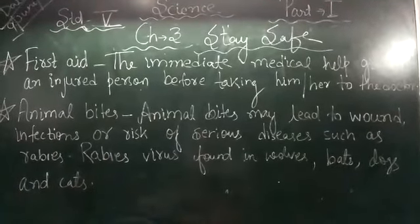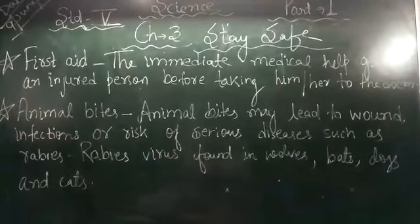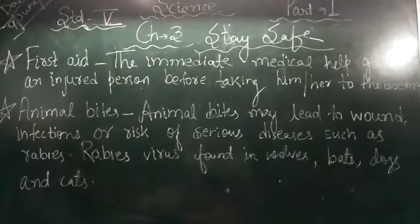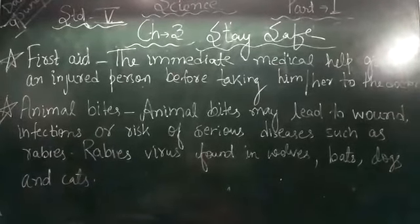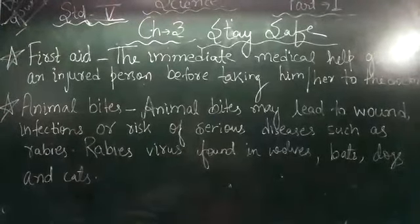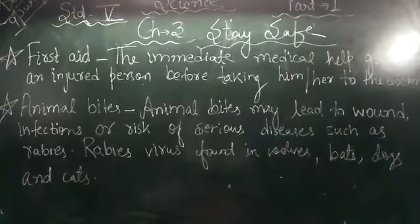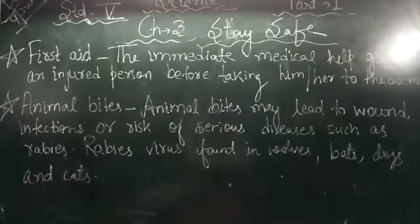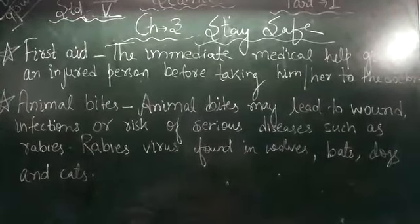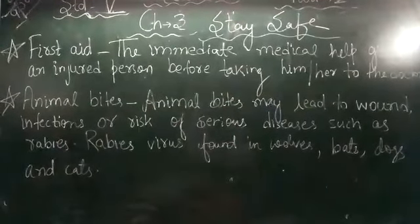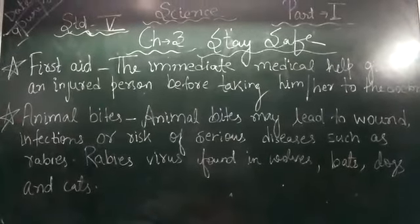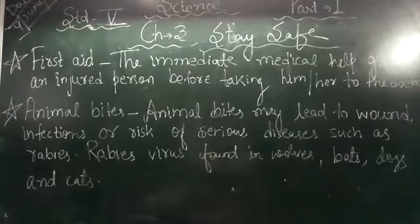Surakshit rehne ke liye kyun kaha jaata hai? Because accident may happen anytime — kabhi bhi, kisi bhi samay, kisi bhi jagah par. Toh iske liye humein first aid treatment ki zaroorat hoti hai. First aid kisko kehte hain? Immediate medical help given to an injured person before taking him/her to the doctor. Toh first aid box bhi apne ghar mein rakhna chahiye — scissors, gauze, antiseptic lotion, antiseptic cream.